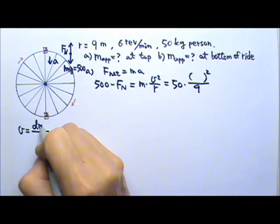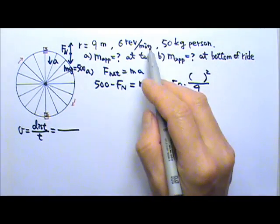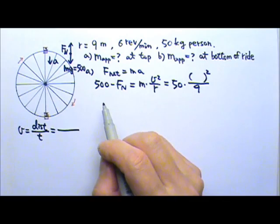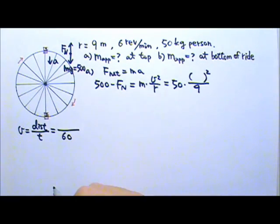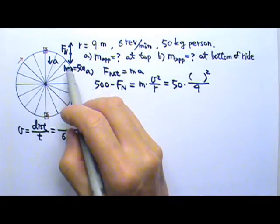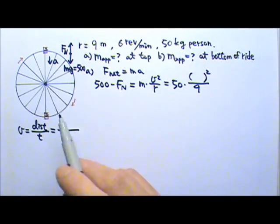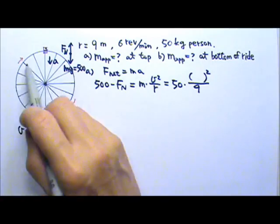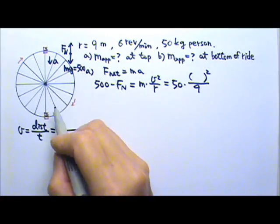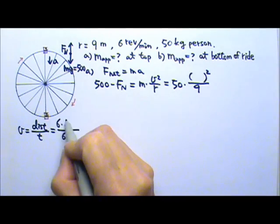Speed is the distance traveled divided by the time. Now in this particular case, it's convenient to look at 1 minute, which means 60 seconds. In 60 seconds, in 1 minute, the person goes around 6 times. So the distance that he travels would be 6 times the circumference.